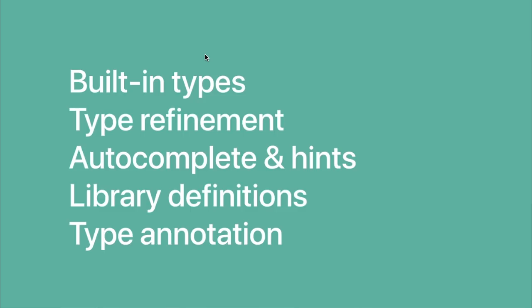The second thing we're going to do is use a technique called type refinement — a process where an unknown value flows into your application, maybe someone posted to your web API, and through type refinement we make assertions about what we hope that input is so that whatever falls out the bottom is a strongly typed value. The whole time we're doing this, we'll take advantage of editor integration with Flow hooked in — autocomplete, method signatures, and hovering over variables to see what type Flow thinks they are. And not all code we use is code we wrote — this application is built on the open source Express web server, so we'll download library definitions for Express.